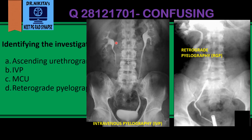We would see opacification of the pelvic calyceal system. When the dye is given intravenously, it is intravenous pyelography. From the vascular system, the dye comes into the kidneys during excretion, and we would see the dye from the kidneys, the ureter, and into the bladder.